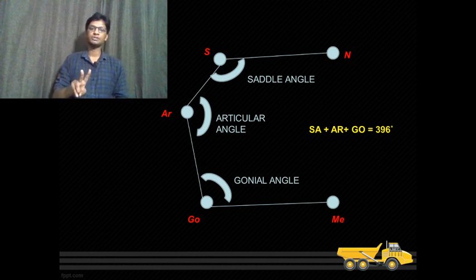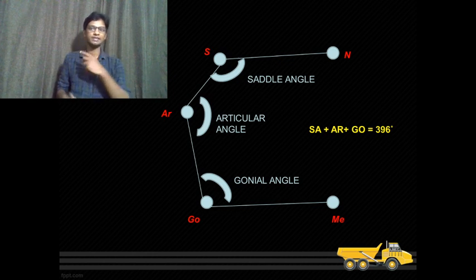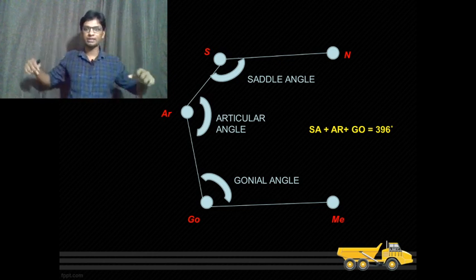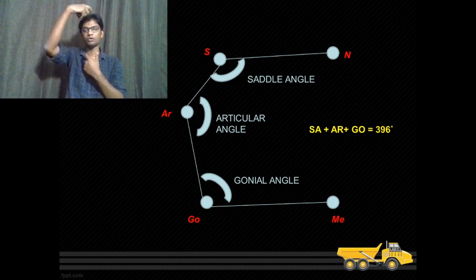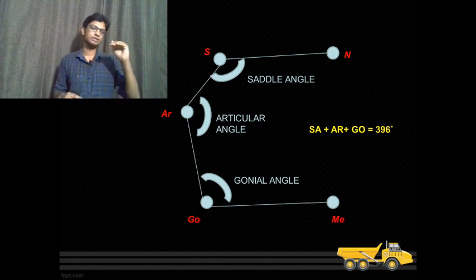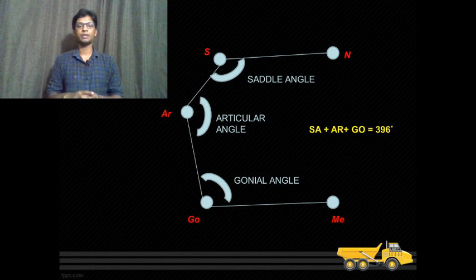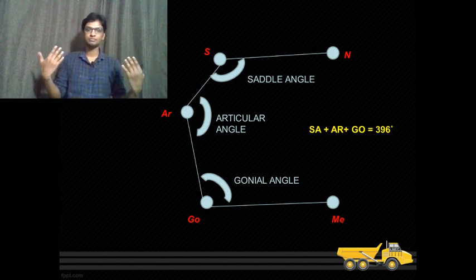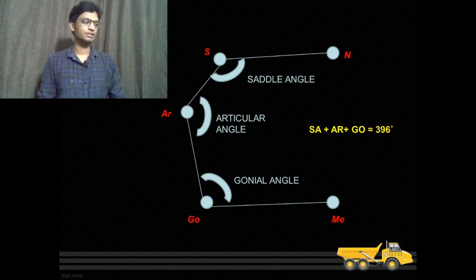There are two types of growth patterns. Someone with a square, chubby face is growing in a horizontal manner — horizontal growth pattern. Someone with a long oval face is growing vertically — vertical growth pattern. And some people grow normally — a normal growth pattern.